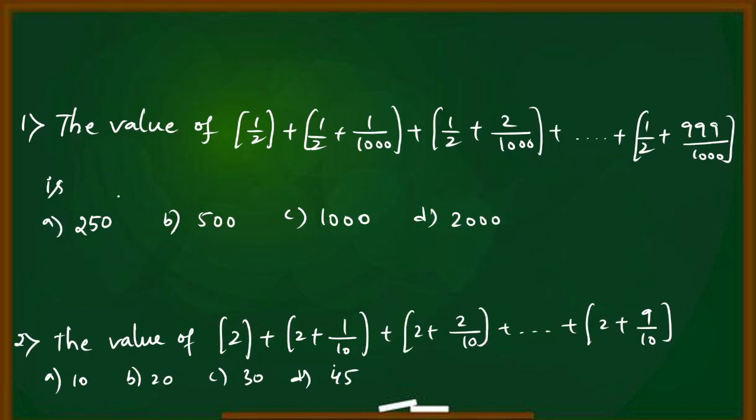Example question: the value of [1/2] + [1/2 + 1/1000] + [1/2 + 2/1000] and so on. The answer is n times x. n is 1000 and x is 1/2, so 1000 times 1/2 equals 500. Option b is the right answer. The second question is similar, you can solve it and write the answer in the comment section.